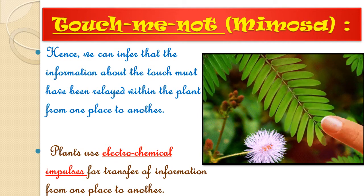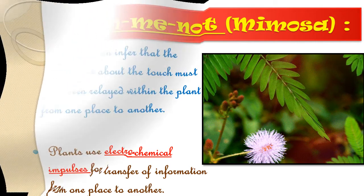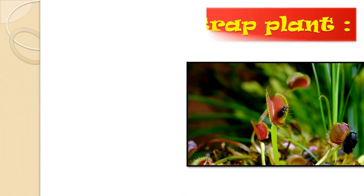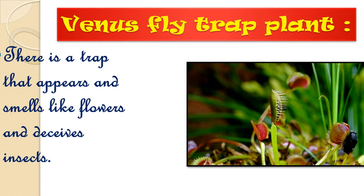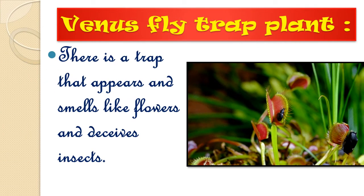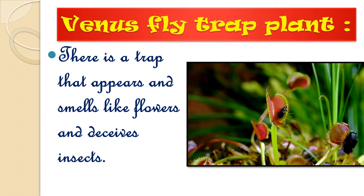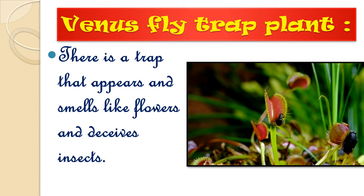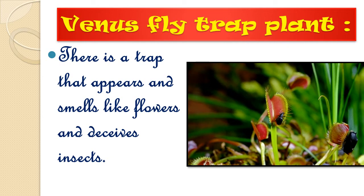In the Venus flytrap, there is a trap that appears and smells like a flower, deceiving insects. Due to the fragrance, insects land on the plant. When an insect visits the flower-like trap, the trap closes and the trapped insect is digested by the plant, as you can clearly observe in the picture.